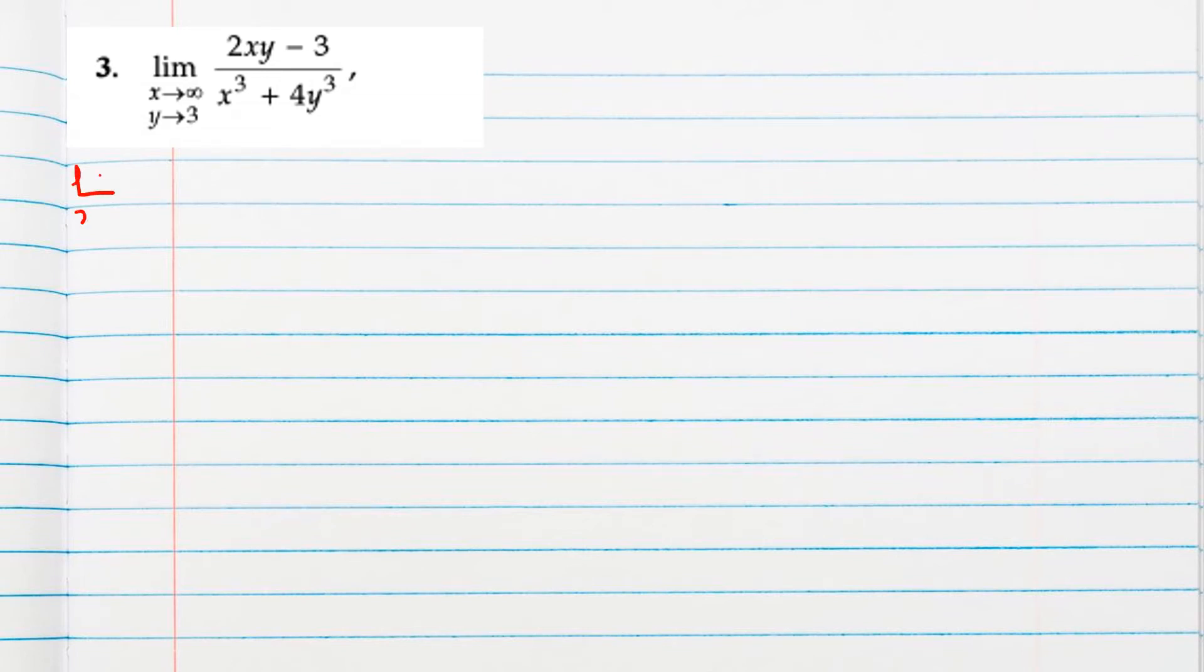For this question, limit x tends to infinity, we will keep first y value. So limit x tends to infinity, y equals 3 means here substitute 3. So 6x minus 3 we can say, and x cube plus here 27 into 4, because 3 cube is 27, so it will be 27 into 4, which is 108.